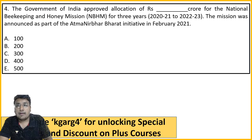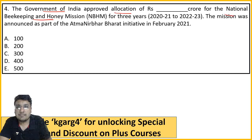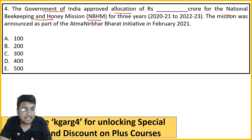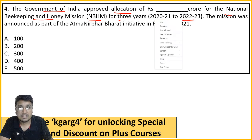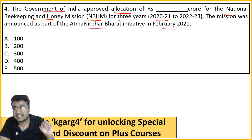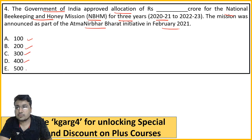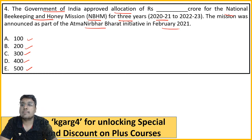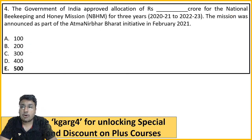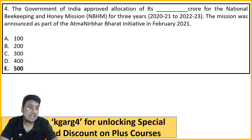Next question: How much has the government allocated for the National Beekeeping and Honey Mission (NBHM)? This is a national beekeeping and honey production development project for 3 years, from 2020 to 2022. As of February 2021, how much money was announced? Options: 100 crore, 200 crore, 300 crore, 400 crore, or 500 crore. The right answer is option E - 500 crore for the National Beekeeping and Honey Mission for 3 years.